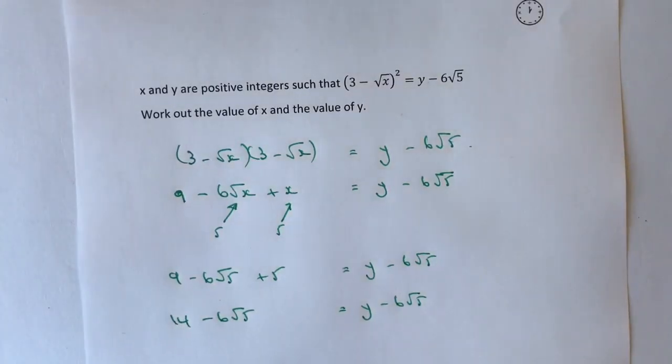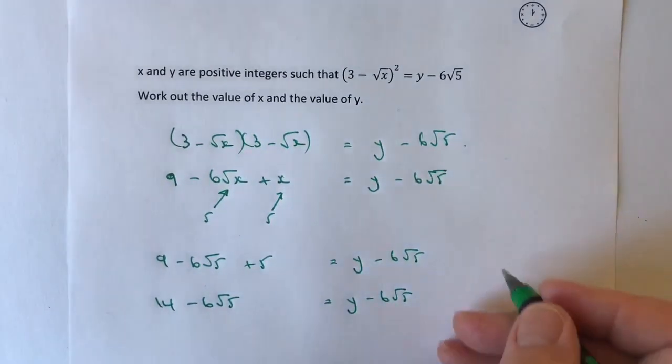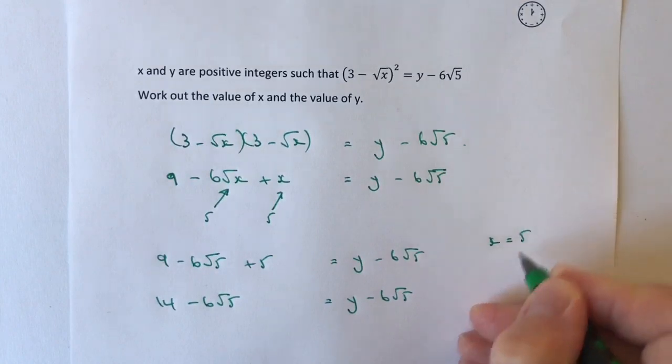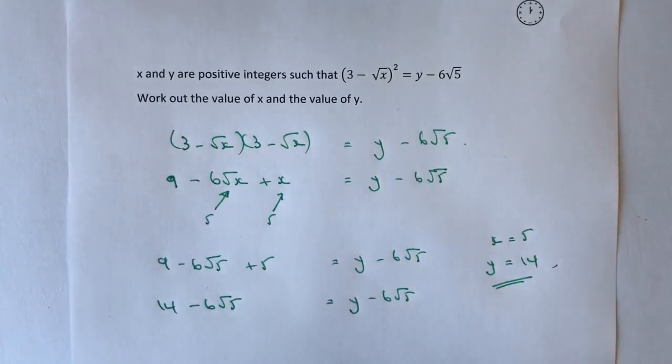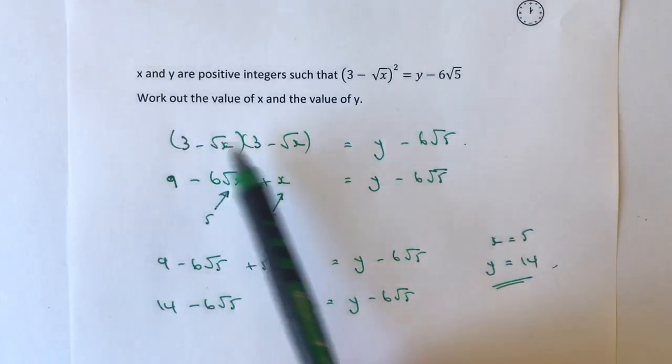So in other words, what we're saying is the value of x is going to be equal to 5 and the value of y is going to be equal to 14. And actually, that's the answer to the question. So it's only a couple of minutes to do this sort of question, but you obviously have to have confidence in being able to do the expansion as we've got there.